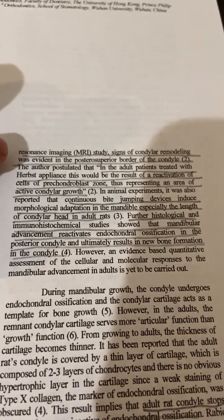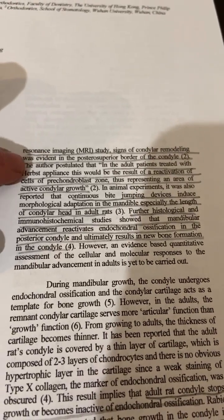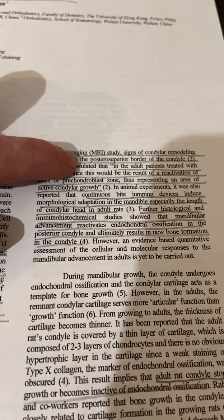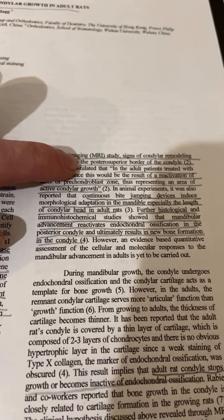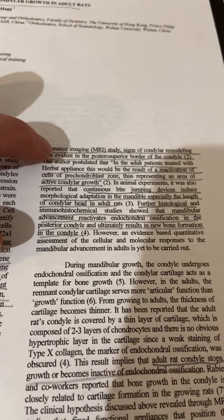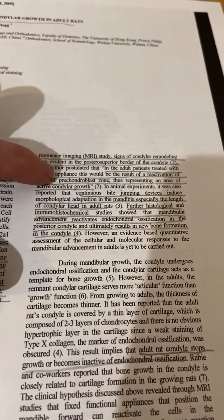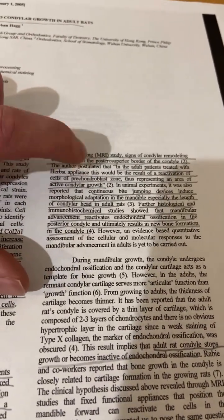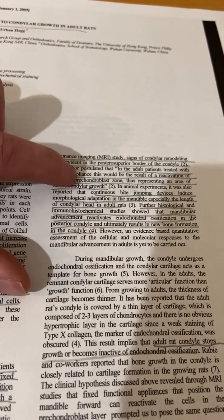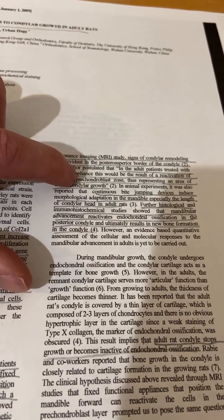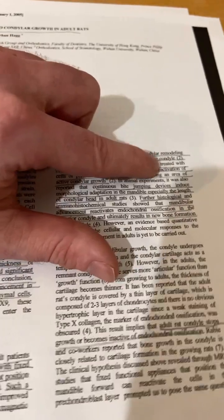In MRI imaging, signs of condylar remodeling was evident in the posterior superior border of the condyle. This is very, very good. In the adult patients treated with Herbst appliance, this would be the result of a reactivation of cells in a precondyloblast zone. That is absolutely amazing. Reactivation, especially using that word. That means that maybe the growth plate,